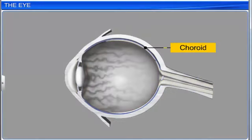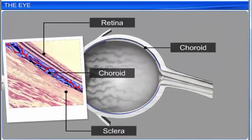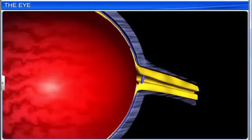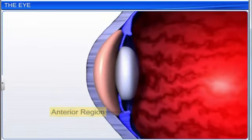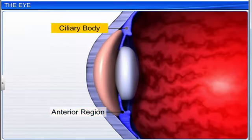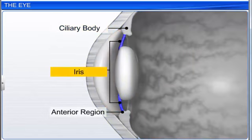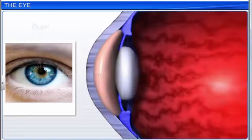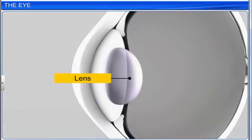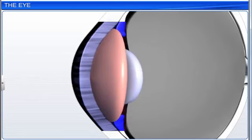The middle layer, or choroid, is bluish in color and contains many blood vessels. The choroid layer is thin over the posterior two-thirds of the eyeball, and thick in the anterior region, where it forms the ciliary body. The ciliary body continues to form the iris, the visible colored portion of the eye. The eyeball contains a transparent crystalline lens held in place by the ligaments of the ciliary body. In front of the lens, the iris surrounds an aperture called the pupil.